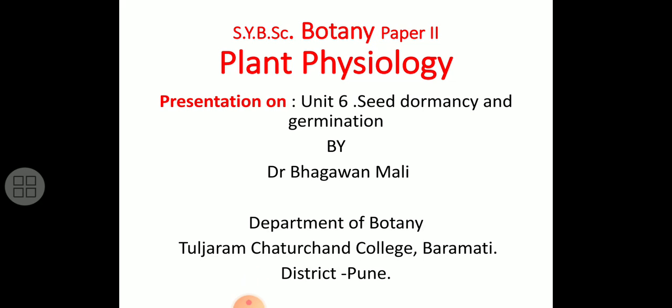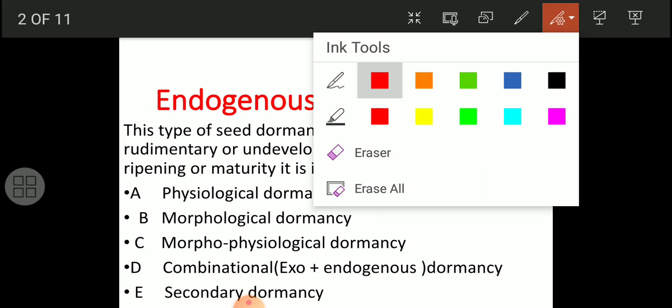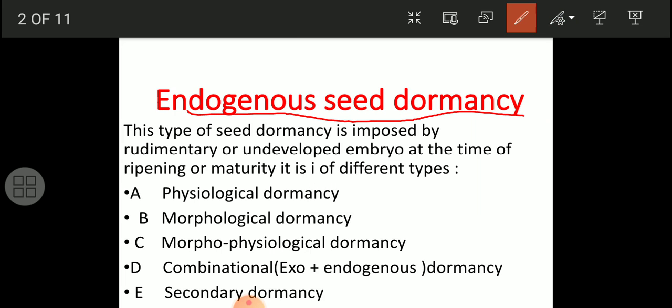Today we have to get an idea about endogenous seed dormancy - endogenous meaning internal factors which impose dormancy. Here you have to keep in mind that this type of seed dormancy is imposed by a rudimentary or undeveloped embryo. Whenever seeds are produced by the plant, the embryo remains undeveloped or rudimentary; it requires some time after harvesting for embryo maturation.